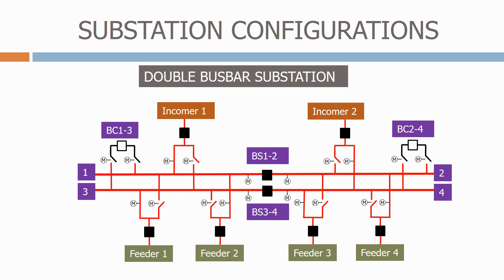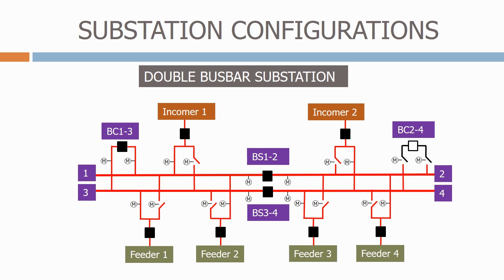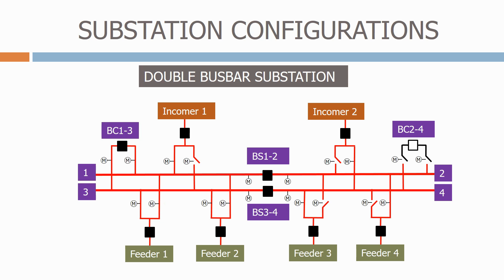Let's see how we achieve the non-load changeover. Firstly we close one of the bus couplers to connect the two bus bars together. The bus coupler has an inbuilt synchronising relay to make sure that the parameters on each bus bar are the same. Once the bus coupler is closed we can close the second bus bar isolator on each of the feeders. Once this is done we can open the original bus bar isolator, and we've now changed over which bus bars the feeders are connected to. We then open the bus coupler circuit breaker again, splitting the bus bars.